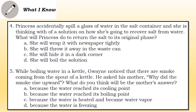Number four: Princess accidentally spilled a glass of water in the salt container and is thinking of a solution to recover the salt from the water. What will Princess do to return the salt to its original state? A) She will wrap it with newspaper tightly, B) She will throw it away in the waste can, C) She will hide it in a dark corner, D) She will boil the solution. Number five: While boiling water in a kettle, Way noticed smoke coming from the spout and asked his mother why the smoke rises upward. What do you think the mother's answer will be? A) Because the water reached its cooling point, B) Because the water reached its boiling point, C) Because the water is heated and became water vapor.